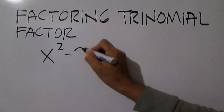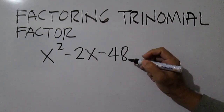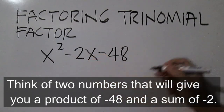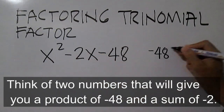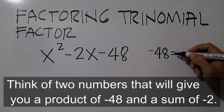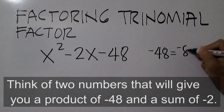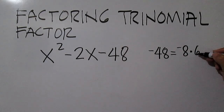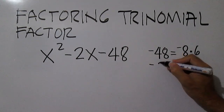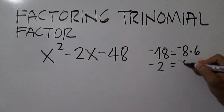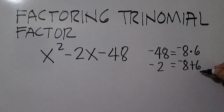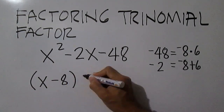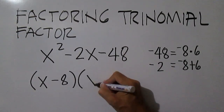Factor x squared minus 2x minus 48. Think of two numbers that will give you a product of negative 48 and a sum of negative 2. Negative 48 is equal to negative 8 times 6. Negative 2 is equal to negative 8 plus 6. The factors are x minus 8 and x plus 6.